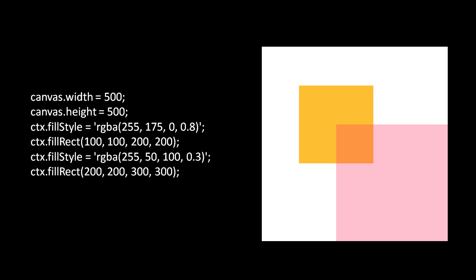If we specify different alpha values — giving the orange square an alpha of 0.8 and the magenta square an alpha of 0.3 — the orange appears to be a lighter shade because it's on a white background and more of the underlying background shows through. The magenta square now actually appears pink because of the more transparent alpha value of 0.3. And where the magenta square is drawn over the orange square, the orange seeps through because the magenta is quite transparent.